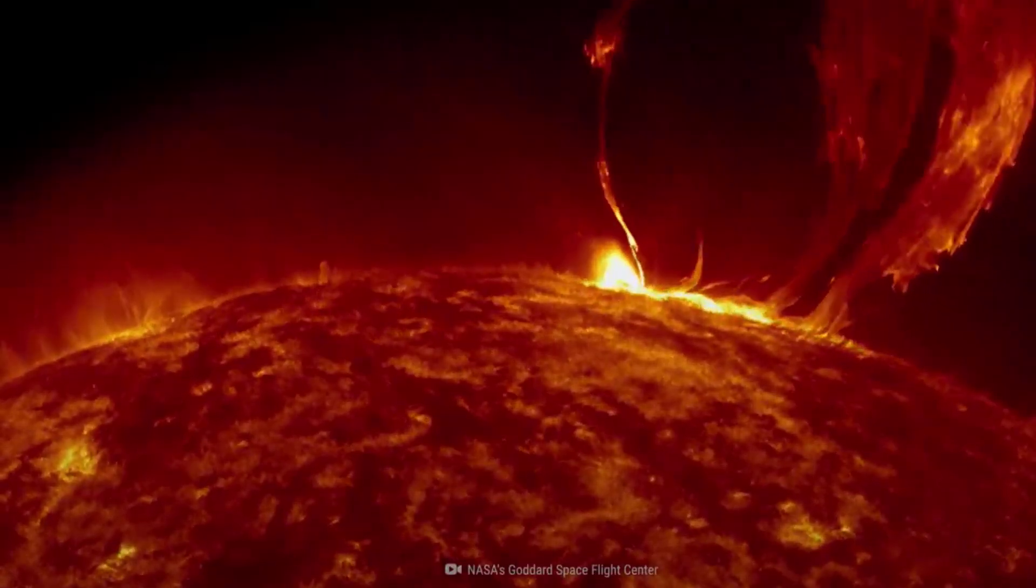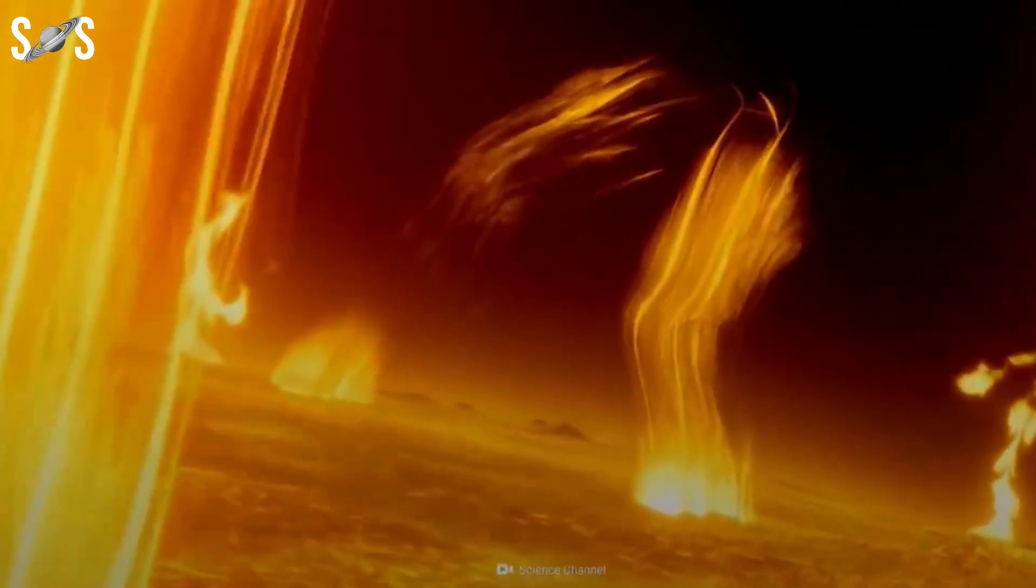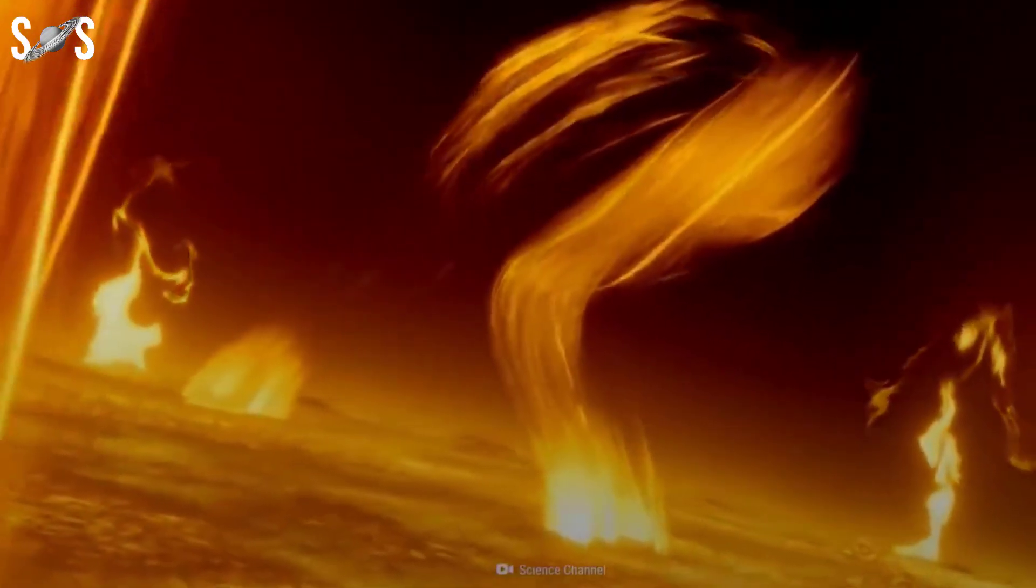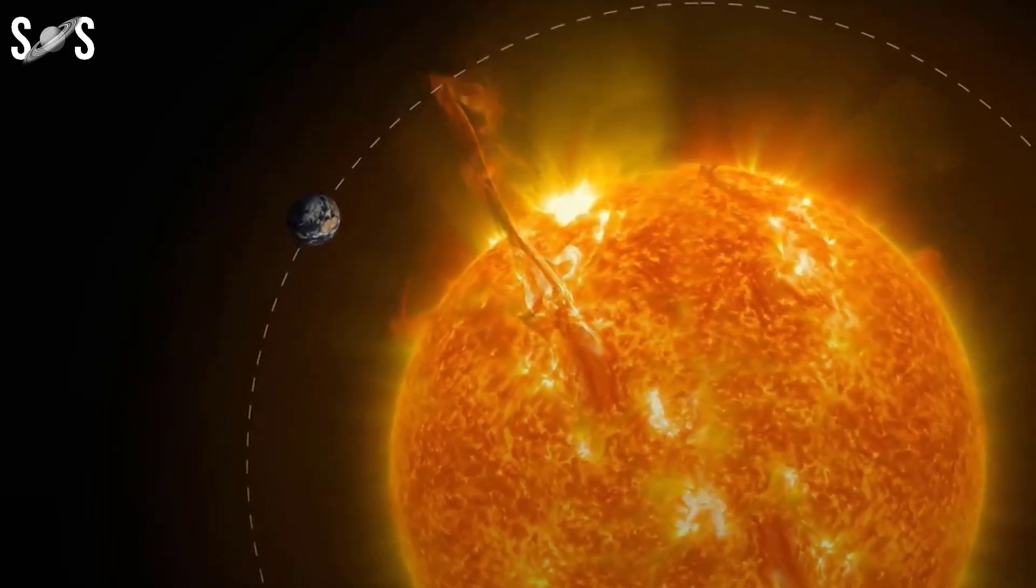Solar storms, also known as geomagnetic storms or coronal mass ejections (CMEs), can have several effects on Earth. When a solar storm reaches Earth, it interacts with the planet's magnetic field, causing several impacts.